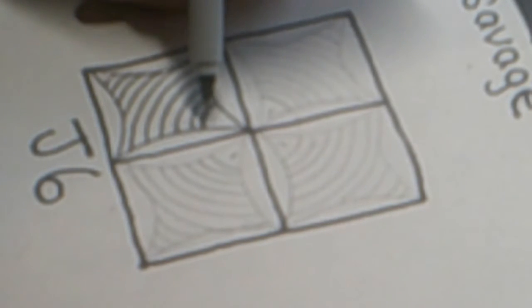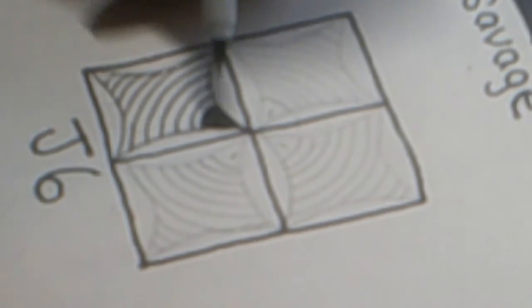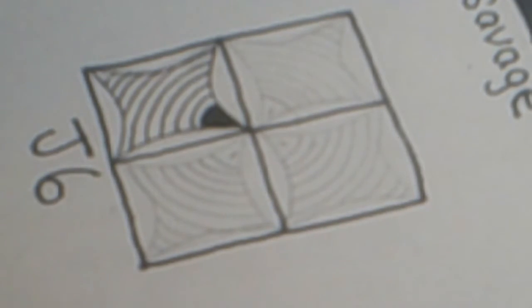Okay, now this center part here from our first bow that we made, let's color this in black. And now I'll repeat that in the other three squares.